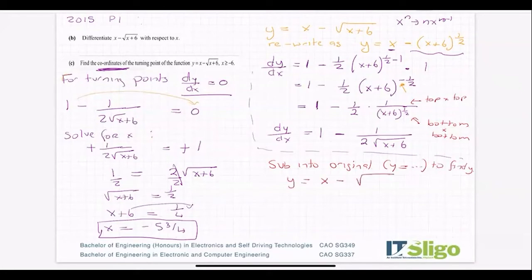So y is equal to x minus root x plus 6. It's equal to minus five and three quarters minus root minus five and three quarters plus six. Put that into the calculator is what I would do with that now rather than try to work it out in bits. And I am going to get minus six and a quarter. That's my y coordinate.